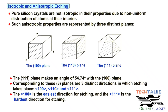For pure silicon, which has anisotropic crystal structure, the atomic orientation is different in different planes. These basic planes and directions were covered in Module 4.